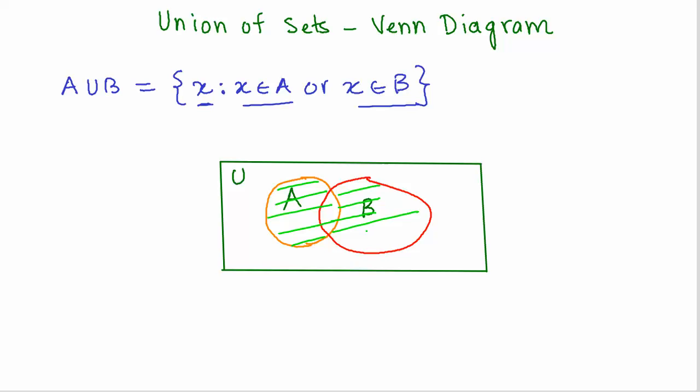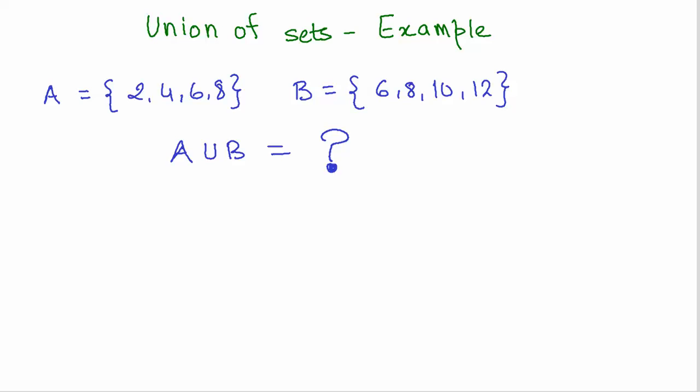Please note that this common part represents the elements that are present in A as well as B. But when we say A union B, it represents all the elements in A and B. This is how we represent the union operation by a Venn diagram.